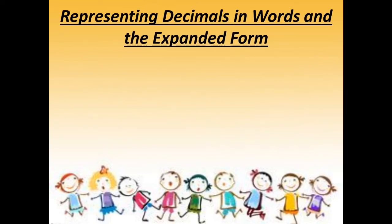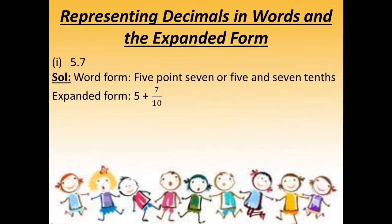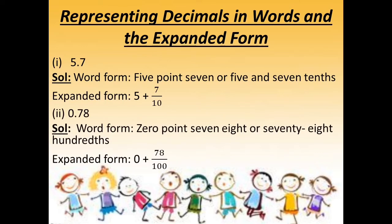Using what we have learnt, we will now learn how to represent decimals in words and in expanded form. The first is 5.7. In word form it can be written as 5 and 7 tenths. In expanded form, we write 5 plus 7 upon 10. The second part is 0.78. In word form, it is 78 hundredths. In expanded form, we write 0 plus 78 upon 100. Hopefully it is clear to you.